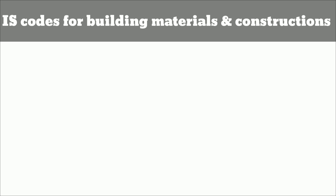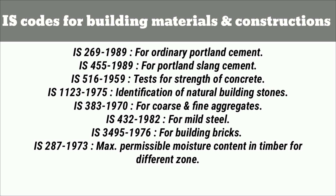IS codes for building materials and construction: IS 269-1989 gives specifications for ordinary Portland cement. IS 455-1989 gives specifications for Portland slag cement. IS 516-1959 covers methods of test for strength of concrete. IS 1123-1975 covers methods of identification of natural building stones. IS 383-1970 gives specifications for coarse and fine aggregates. IS 432-1982 gives specifications for mild steel.